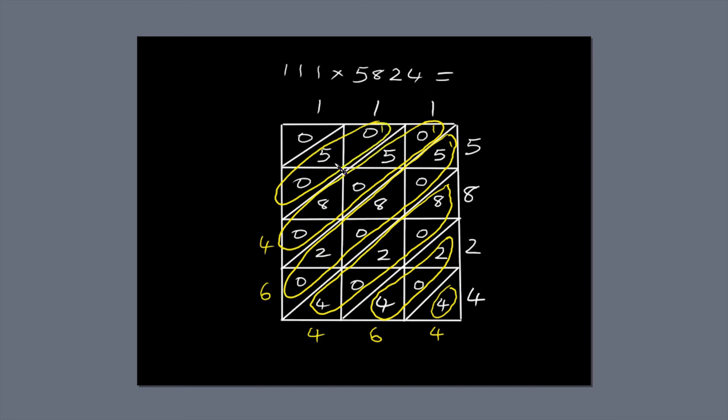1 plus 5 is 6. The final diagonal only has the number 0 in it, so write 0 next to the diagonal.